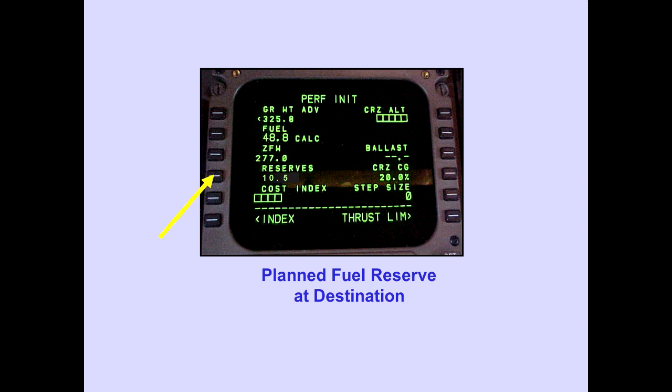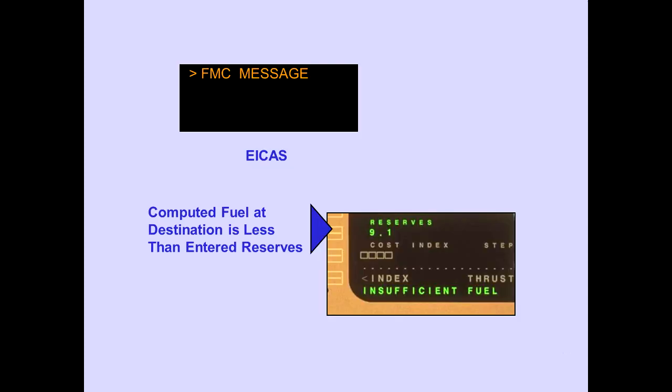Reserve fuel, as used on the FMS-CDU, is the planned fuel in reserve at destination. It is ATLAS policy to add 7,000 kilograms planned fuel at the alternate, plus fuel to divert to the alternate from the flight plan, and enter this amount in the reserves line. The FMC message "insufficient fuel" is displayed if the computed fuel at destination is less than the entered reserves.